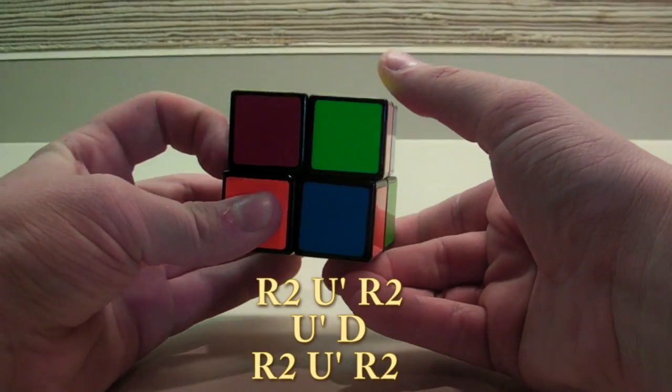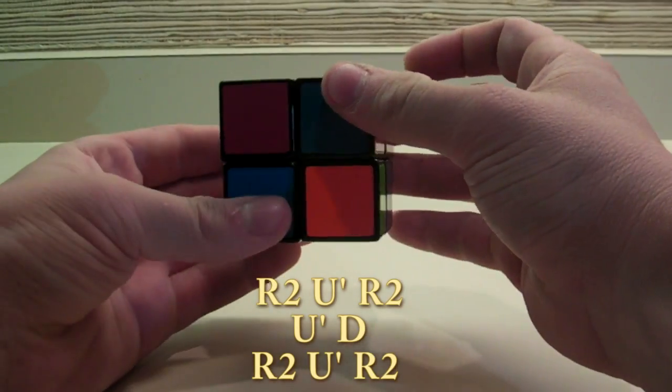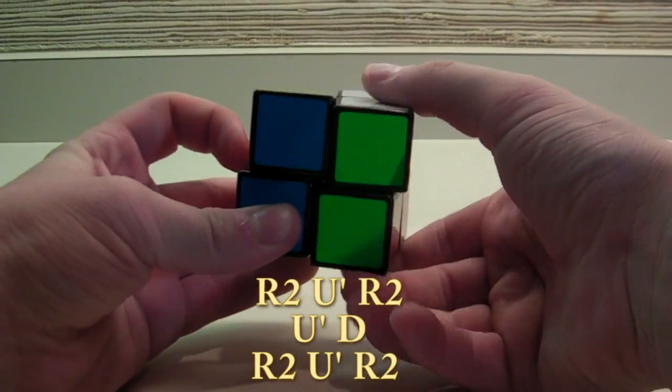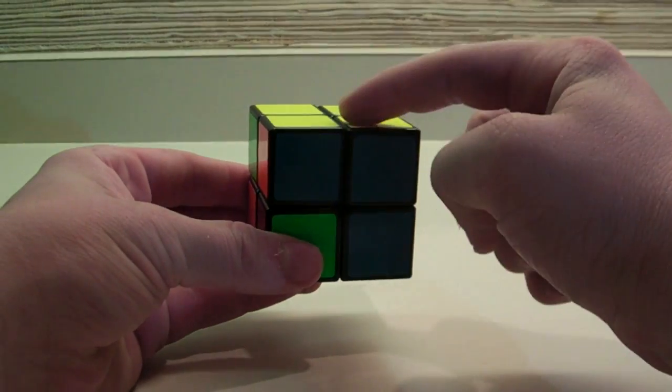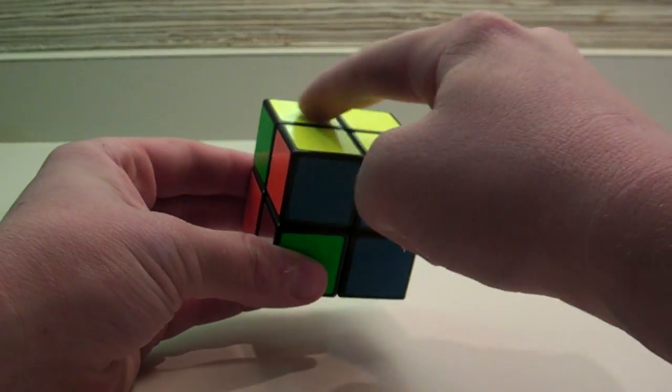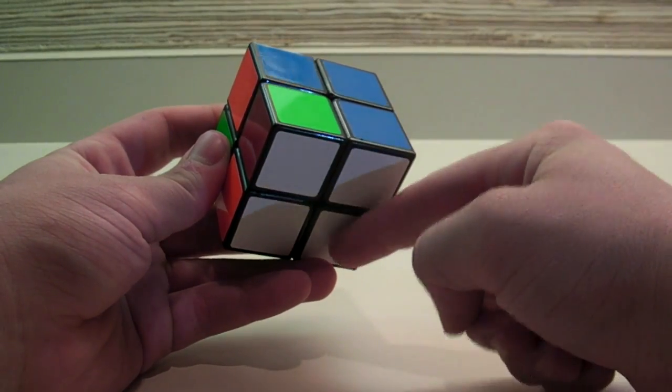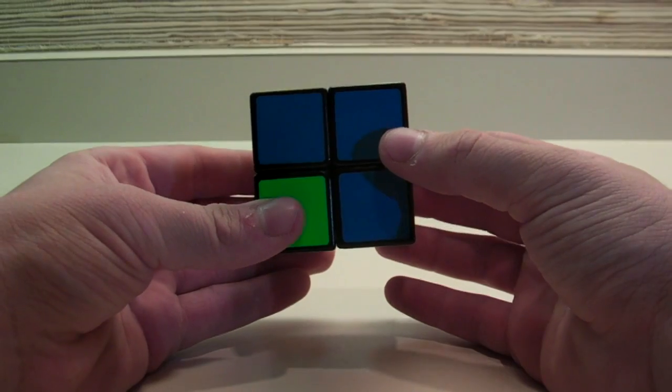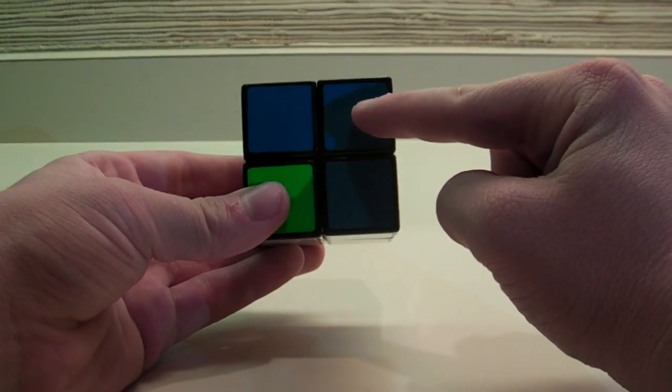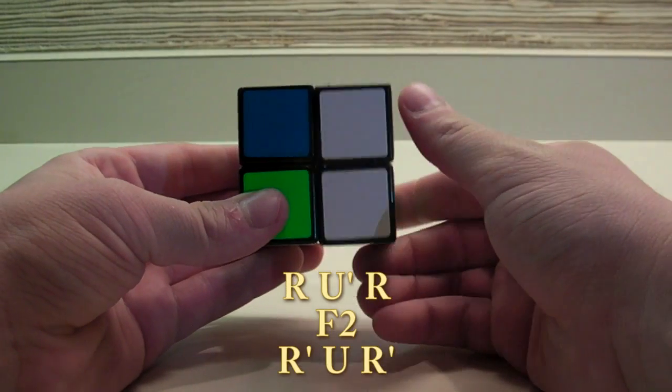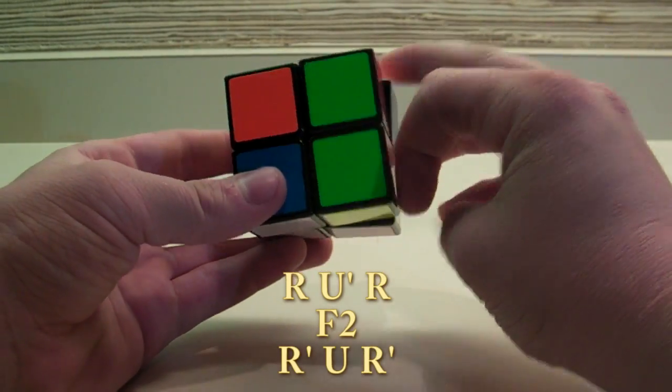R2, U', R2, U', D', R2, U', R2. The third case that you can get is where on the top layer you need to switch two adjacent corners, and on the bottom layer you need to switch two opposite corners. You orient the cube so that the two matching pieces on the top layer are facing you, and then you do an R, U', R, F2, R', U', R'.